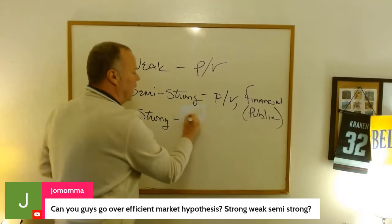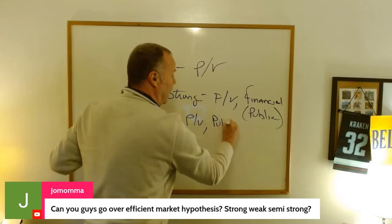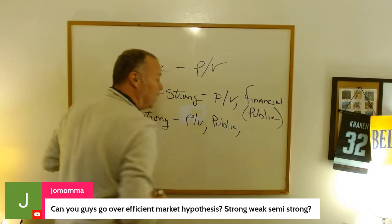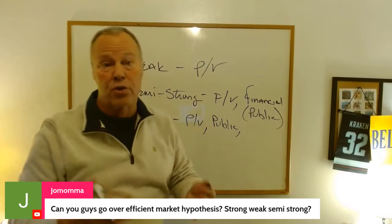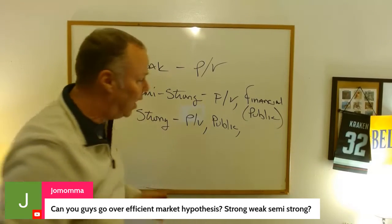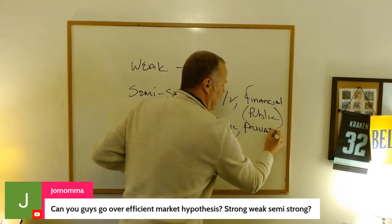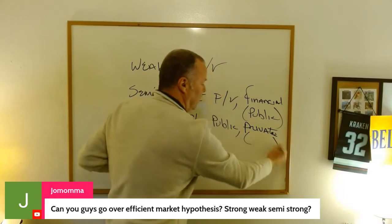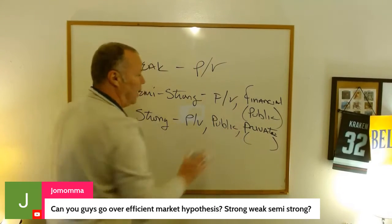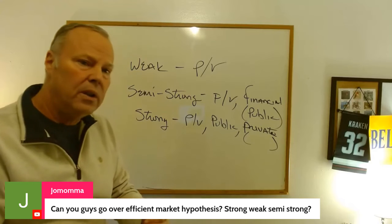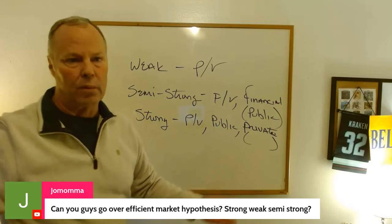The strongest form is when you have all available information — the financial information, as well as information known to insiders, like mergers and acquisitions. We can call that private information, or information known to insiders. Notice it's just a pyramid of information: the least amount is the weakest form, the most amount is the strongest form.